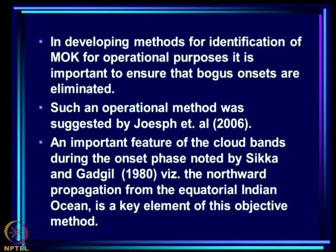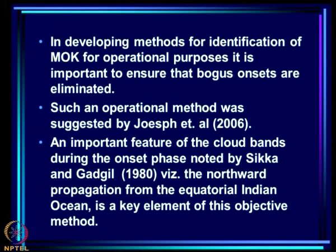Rather, systems are generated, propagate to a certain point, die, another gets generated and propagates further northward, and so on. It is not a single event that gives the onset phase of the monsoon. If what appears to be a first onset occurs many days before the real onset — after which successive northward propagations occur — it is called a bogus onset. The qualitative difference is primarily one of timing: a bogus onset is an isolated event, whereas during a real onset several events separated by only a few days lead to onset and northward monsoon progression.